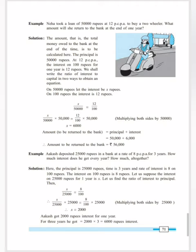Let us consider X be the interest on rupees 50,000. It is already given 12 PCPA, meaning rupees 12 is the interest paid on rupees 100. To solve this example, we will compare both conditions. We have considered X on rupees 50,000, and rupees 12 is already given for rupees 100. So X upon 50,000 is equal to 12 upon 100.